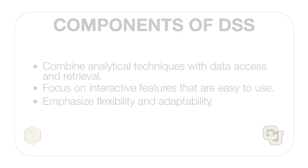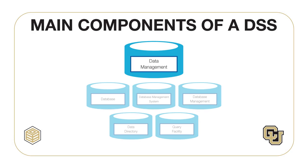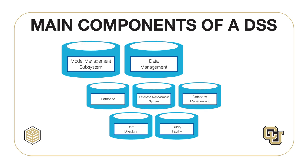DSS contains three main components. First, the data management part of the DSS has the role of getting data from various databases. It contains a database, a database management system, and data directory and query facility. The model management subsystem includes financial, statistical, management science, or other quantitative models that provide the system's analytical capabilities.